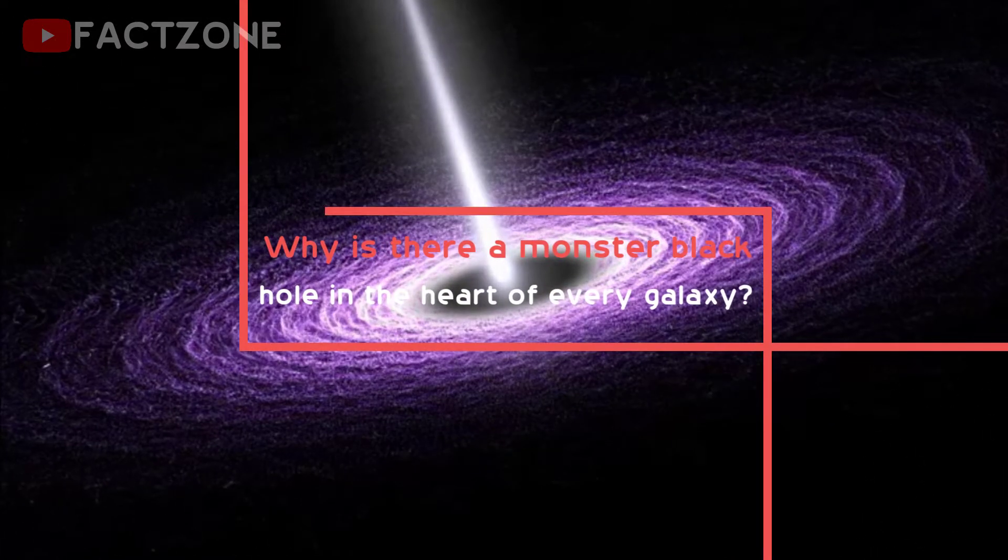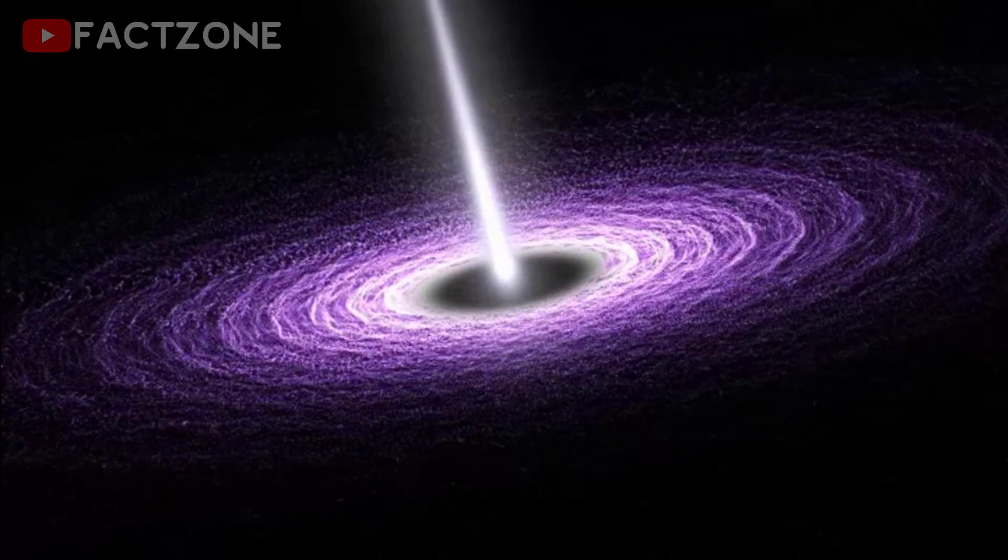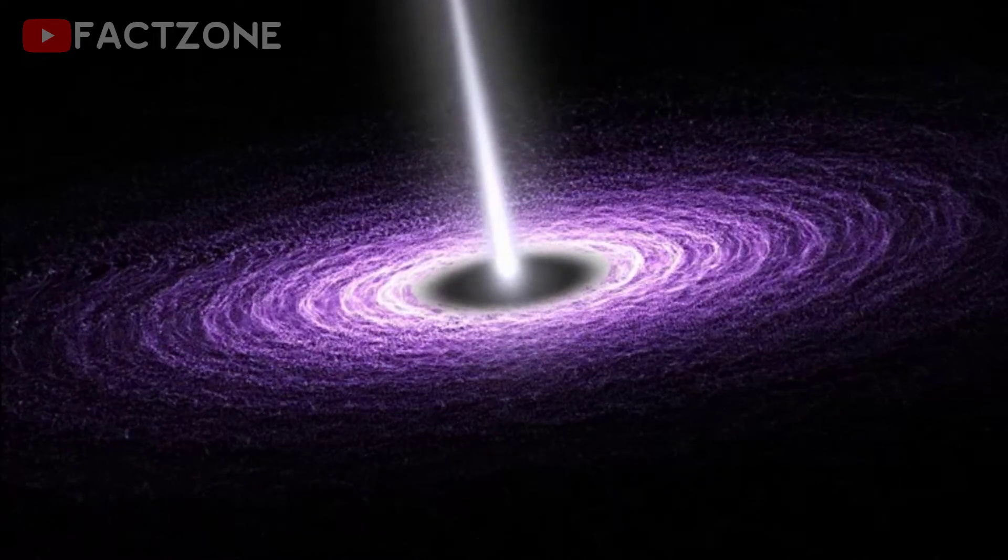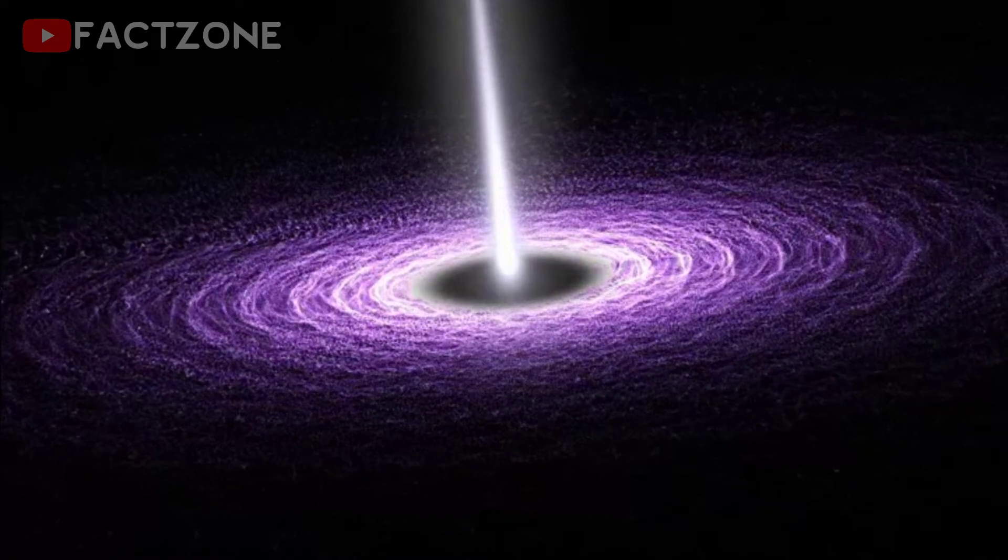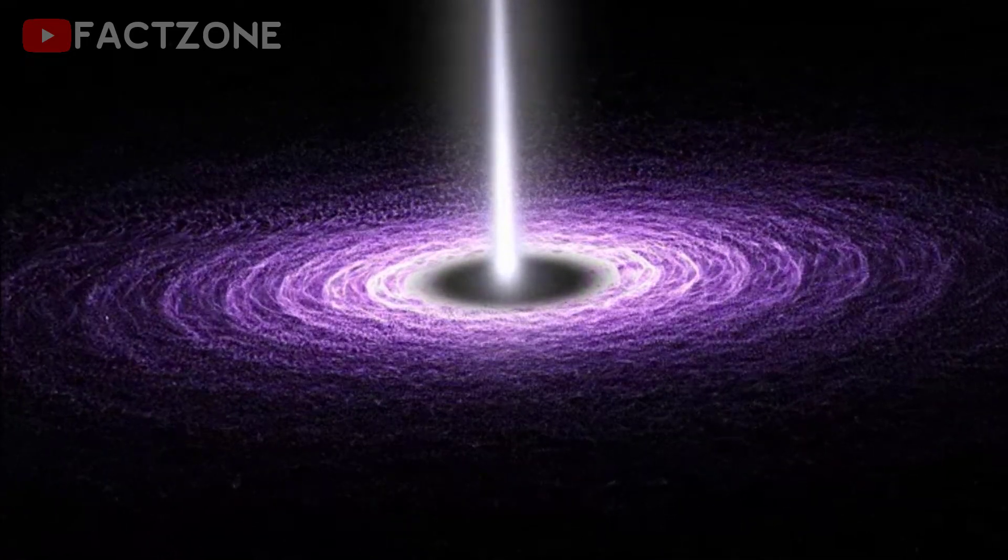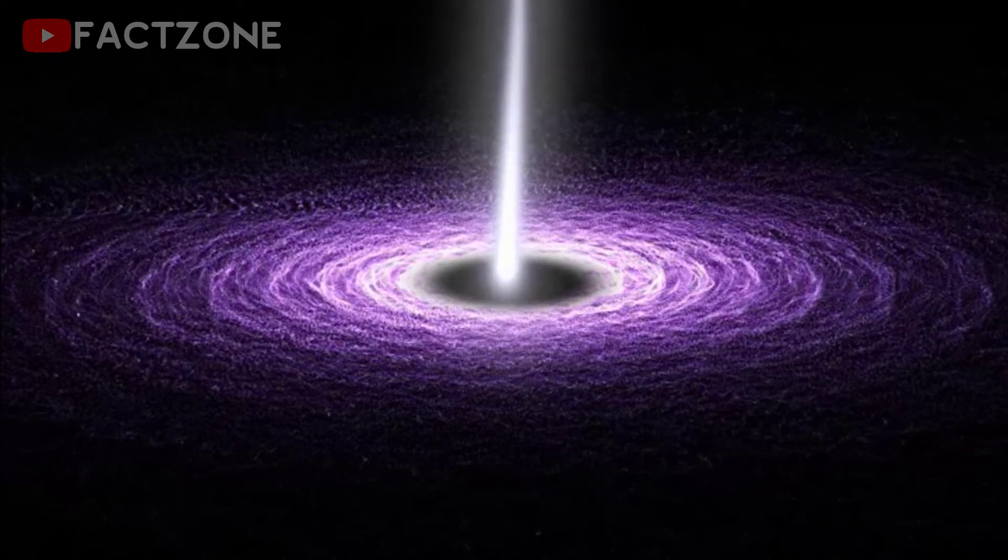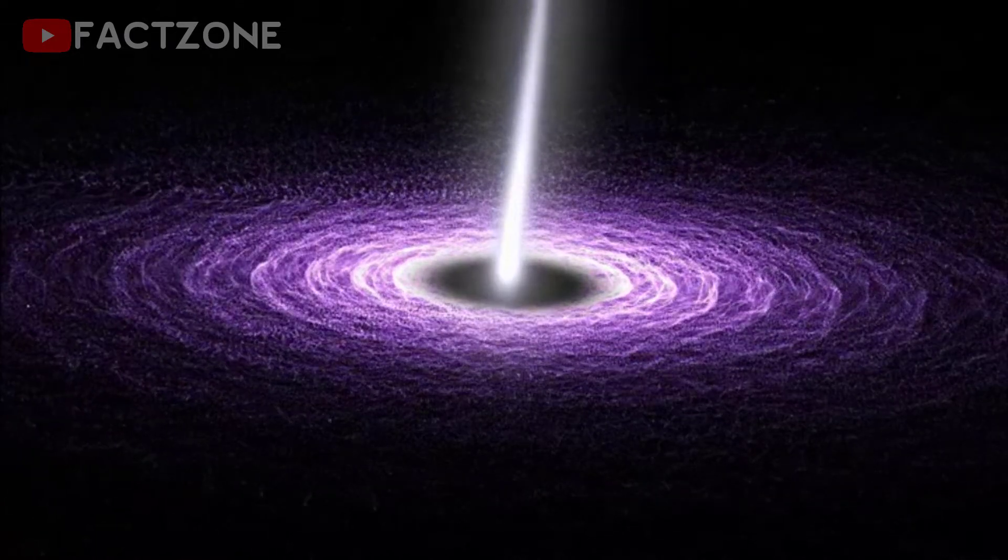Why is there a monster black hole in the heart of every galaxy? There are about 2 trillion galaxies in our universe and, as far as we know, almost every one contains a central supermassive black hole. They range in size from monsters, weighing almost 50 billion times the mass of the sun, to the 4.3 million solar mass tiddler known as Sagittarius A*, in the core of our Milky Way.